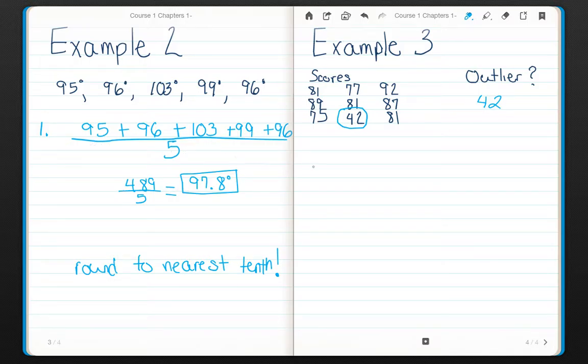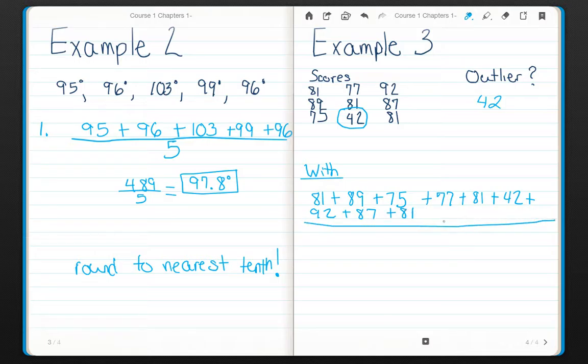If I were to add up my scores with the outlier, and you can follow along in your book for this, if I add all of those up and divide by 9. So 81 plus 89 plus 75 plus 77 plus 81 plus 42 plus 92 plus 87 plus 81. All divided by 9. It is about 78.3.